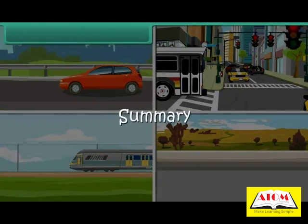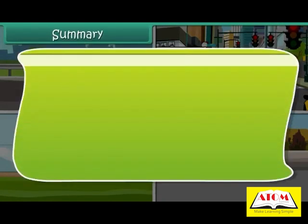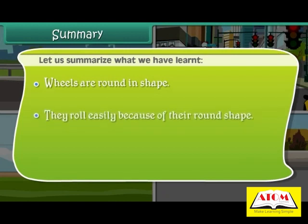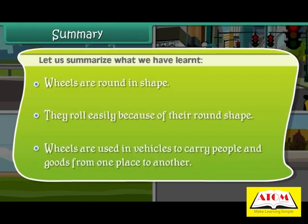Summary. Let us summarise what we have learnt. Wheels are round in shape. They roll easily because of their round shape. Wheels are used in vehicles to carry people and goods from one place to another.